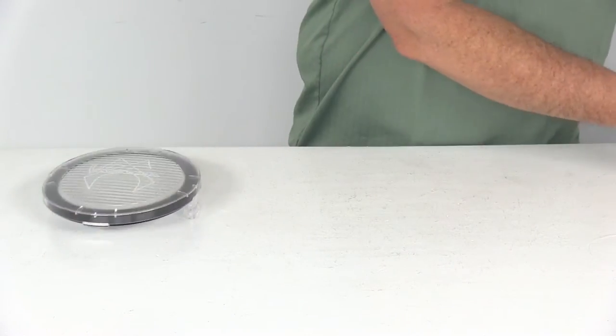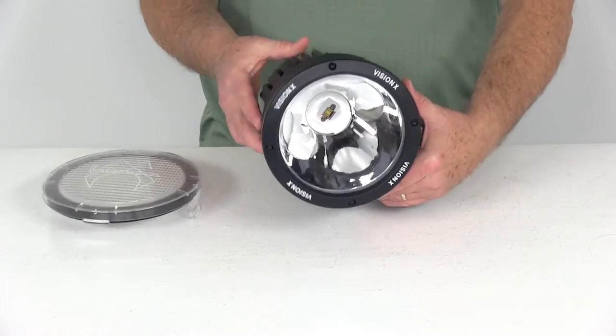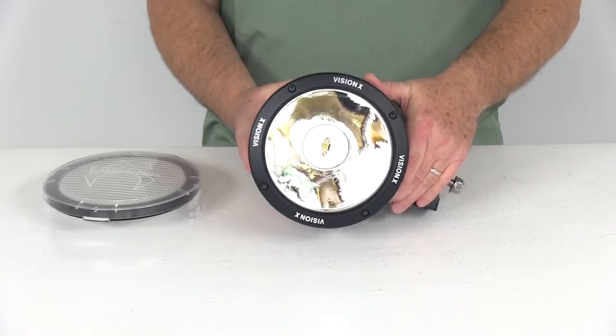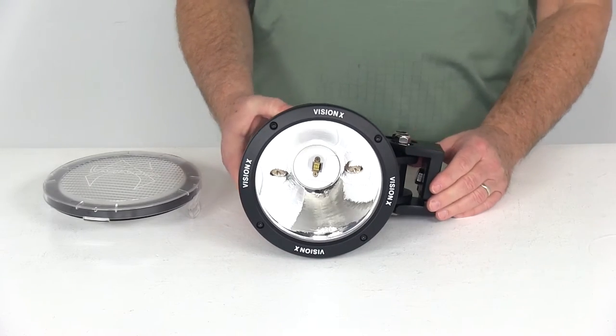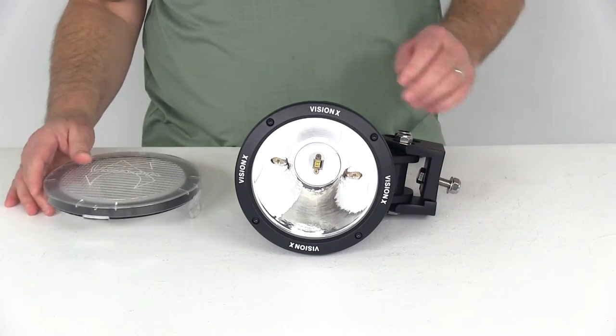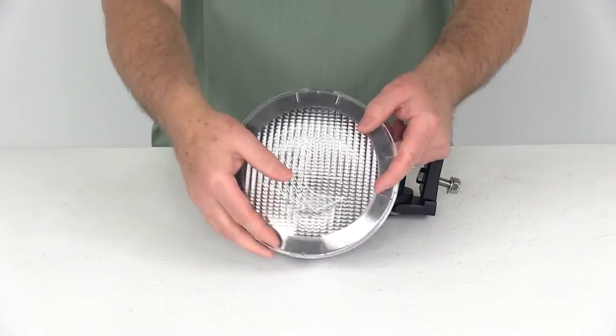Now what I want to show you, I have an example here. This is a 6.7 inch VisionX cannon light and this has a spot beam in it. So if you want to change it from a spot beam to a flood beam, I'll show you how you just snap this on and show you the difference. First I'm going to show you how to install it.